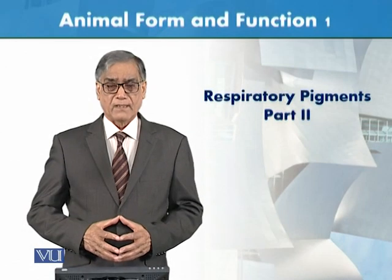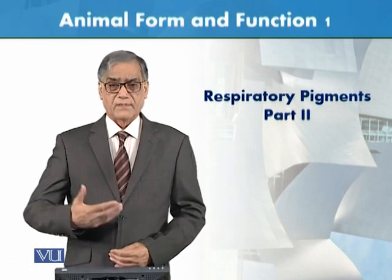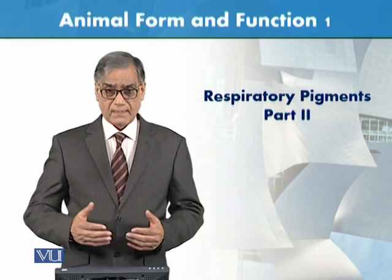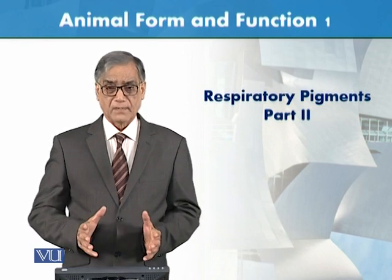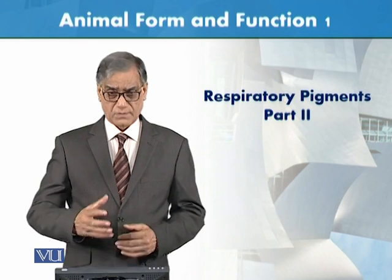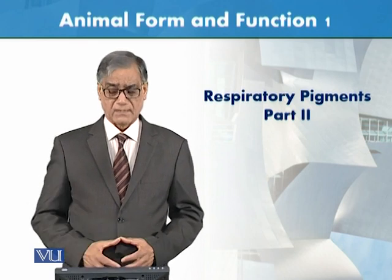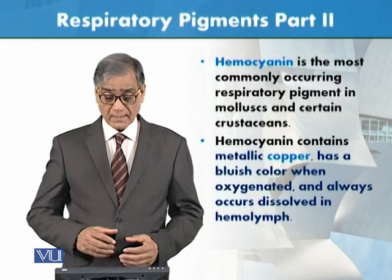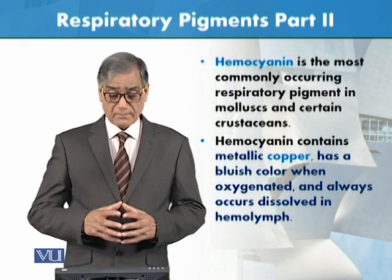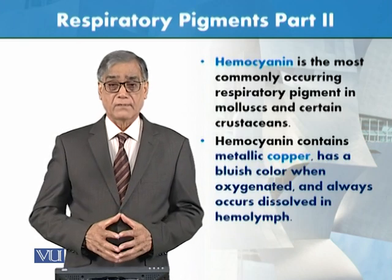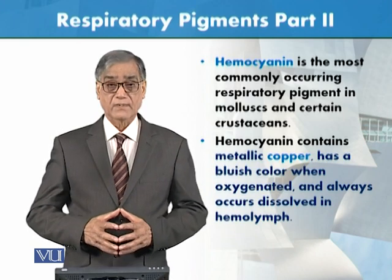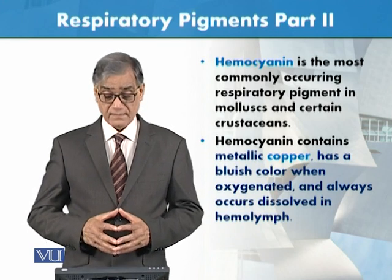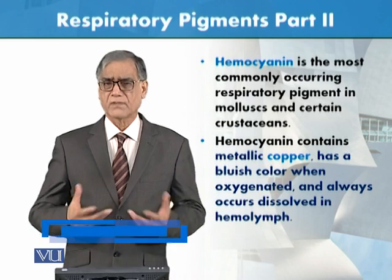In this module, we are talking about the respiratory pigments. Before we have seen the hemoglobin details, now we will talk about the three respiratory pigments. After hemoglobin, there is another important pigment called hemocyanin, and this is the most commonly occurring respiratory pigment in mollusks and certain other crustaceans — more common in invertebrates.